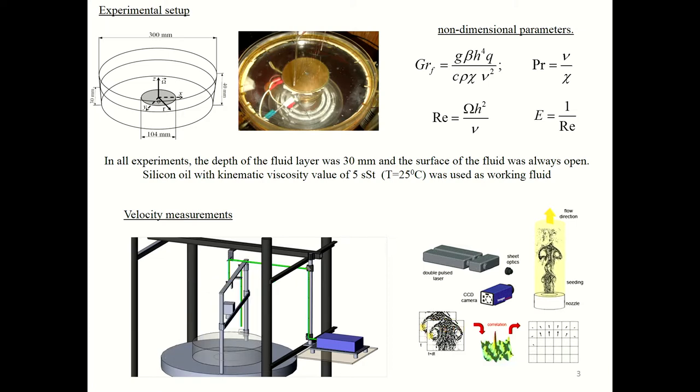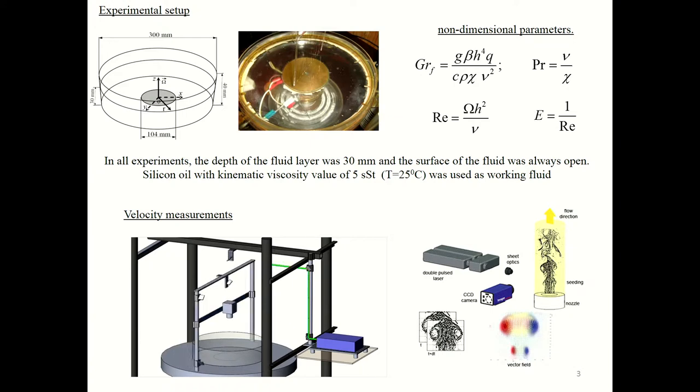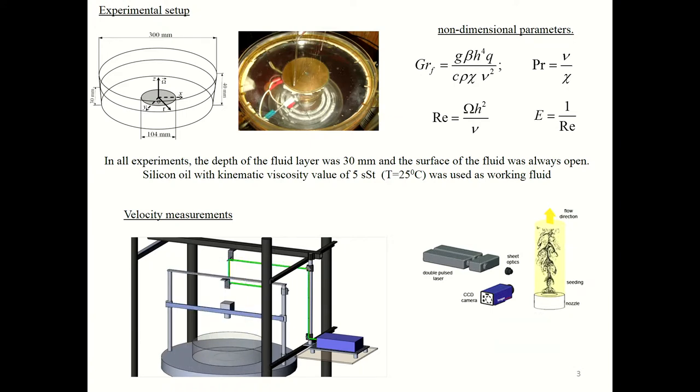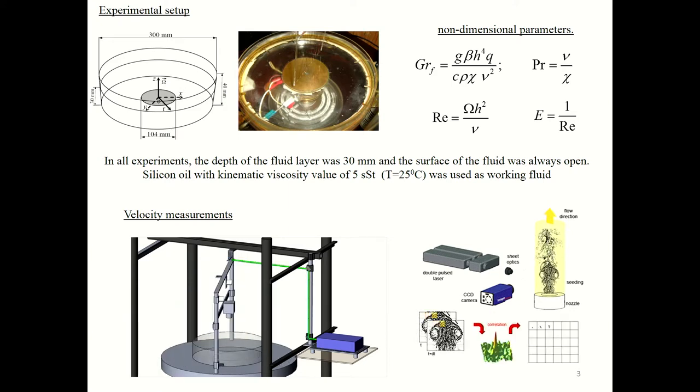The setup was placed on a rotating horizontal table, and the temperature of fluids was measured by thermocouples. For getting the velocity fields we used a 2D particle image velocimetry system, which includes two dual-pulsed lasers and a digital camera placed in the rotating frame, along with a control unit and computer. Here you can see the scheme of experiment and some approaches of the PIV system.